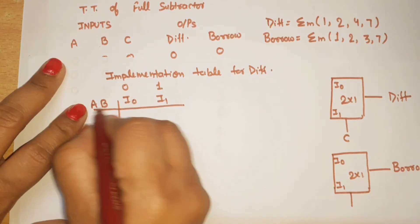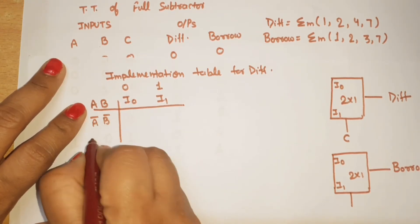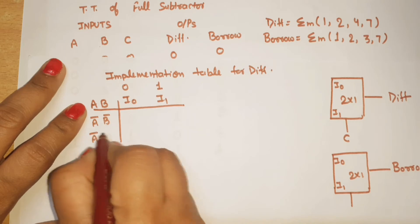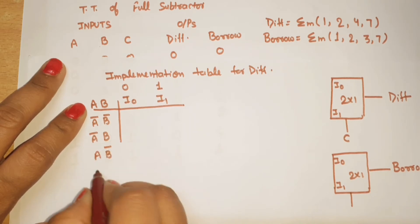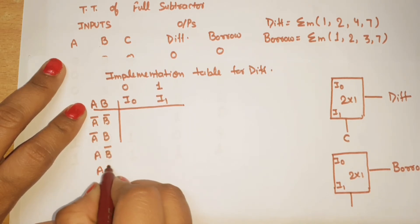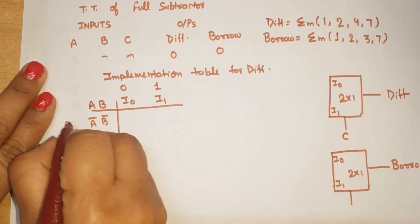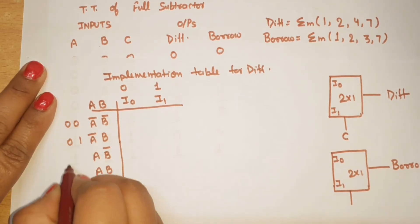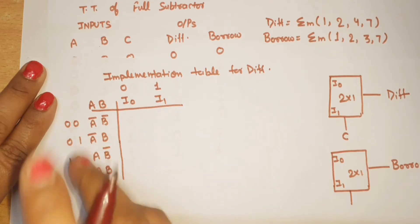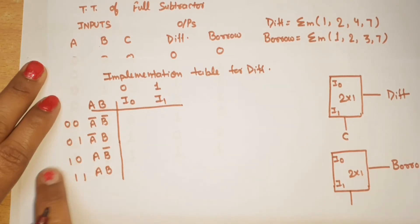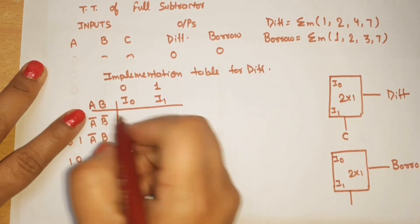The four possible combinations for A and B are: A-bar B-bar, A-bar B, A B-bar, and A B — corresponding to the rows 0 0, 0 1, 1 0, and 1 1. We fill in the values from the truth table: when C=0, minterms 0, 2, 4 map to difference outputs; when C=1, minterms 1, 3, 5, 7 map to the corresponding outputs. The minterm values for difference at positions 1, 2, 4, 7 are marked as 1.